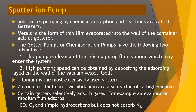Substances pumped by chemical adsorption and reactions are called getters. Metals in the form of thin films evaporated onto the wall of the container act as getters. Getter pumps or chemisorption pumps have two advantages: the pump is clean with no pump fluid vapor entering the system, and high pumping speed can be obtained by depositing the absorbing layer on the wall of the vacuum vessel itself. Titanium is the most extensively used getter material; zirconium, tantalum, and molybdenum are also used. In ultra-high vacuum, certain getters selectively adsorb gases — for example, an evaporated rhodium film absorbs H₂, carbon monoxide, oxygen, and simple hydrocarbons but does not absorb nitrogen.